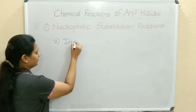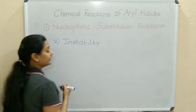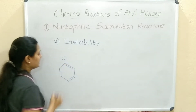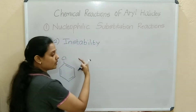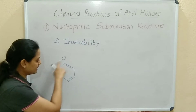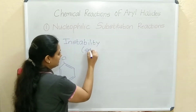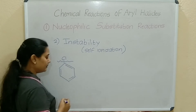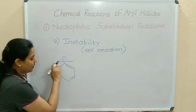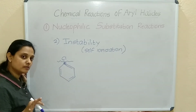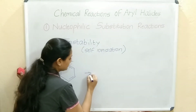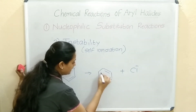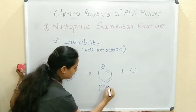The second reason is the instability of the phenyl cation. The halogen is attached to the benzene ring. It undergoes self-ionization — the bond between carbon and Cl breaks. When that bond breaks, the carbon makes only three bonds, Cl minus is left behind, and a phenyl cation is produced.